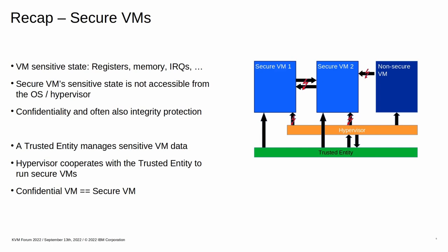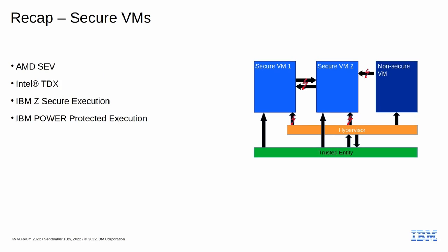As the sensitive state has to be managed in order to run a vCPU, a so-called trusted entity, which is a combination of firmware and hardware, takes over the sensitive portion of secure VM management. The hypervisor uses an ABI to request management actions from the trusted entity in order to run secure VMs. A lot of hardware vendors have already implemented secure VM technology, and while implementations differ, all of them have the concept of a trusted entity and provide protection of sensitive state.